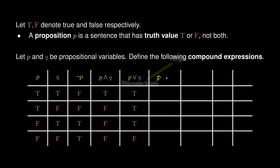The implication is true when, given that P is true, Q must be true. If P is false, we say that P implies Q is true vacuously. The biconditional is true precisely when P and Q have the same truth values. A tautology is always true and a contradiction is always false.